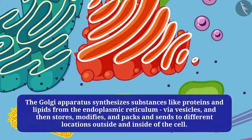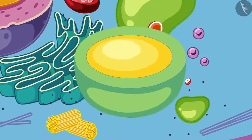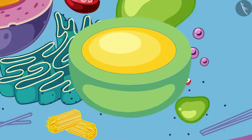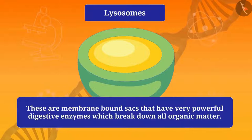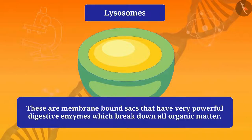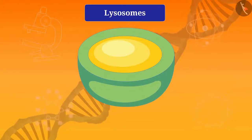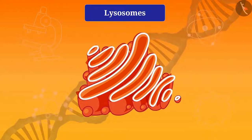For this reason, the Golgi apparatus is also called the post office of the cell. Lysosomes are also produced by the Golgi apparatus. Lysosomes are membrane-bound sacs that have very powerful digestive enzymes which break down all organic matter. These digestive enzymes are formed on the smooth endoplasmic reticulum and packed into lysosomes from the vesicles of the Golgi apparatus.